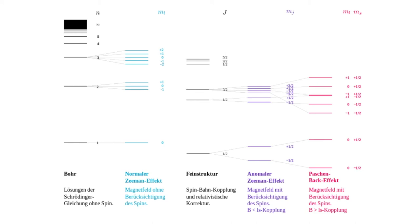In the general case of the anomalous Zeeman effect, the total spin must be taken into account in addition to the total orbital angular momentum. Due to the different Landé g-factors for the orbital angular momentum (g_L = 1) and for the spin (g_S = 2), the total angular momentum and the resulting total magnetic moment are no longer anti-parallel. As a result, the energy levels split into several components, the size of the split is no longer the same for all levels, and more lines can be seen in the transitions.